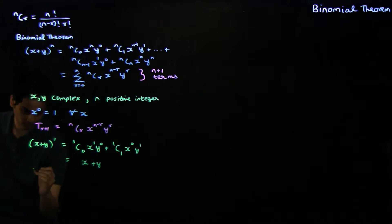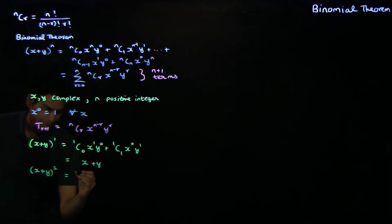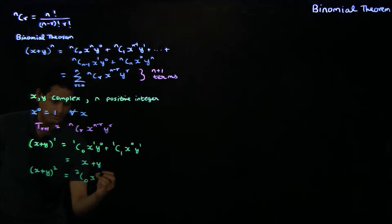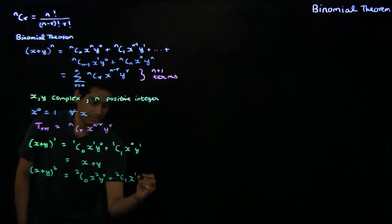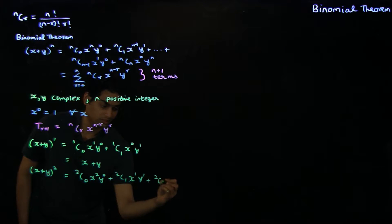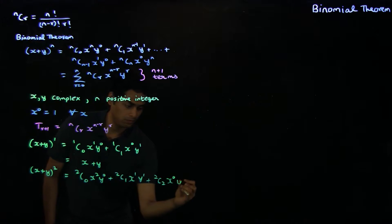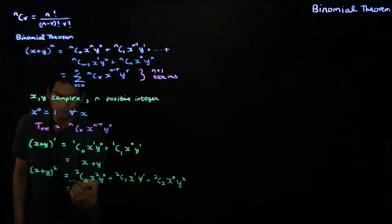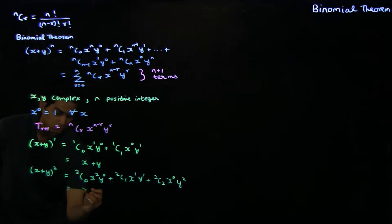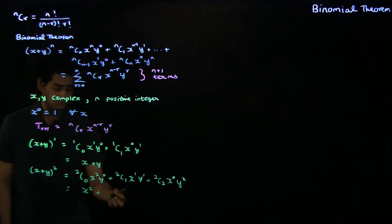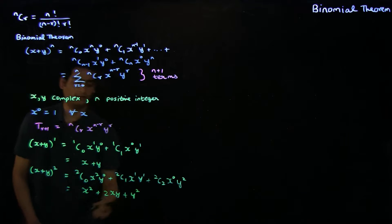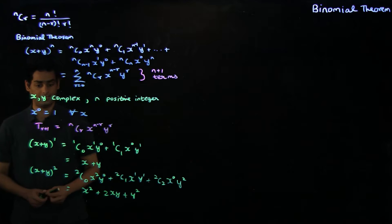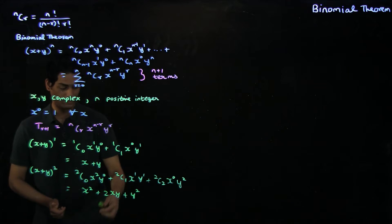We can also derive the case when we have x plus y whole squared. This is nothing but 2C0 times x squared times y to the 0, plus 2C1 times x to the power 1 times y to the power 1, plus 2C2 times x to the power 0 times y squared. Since 2C0 is 1 we have x squared, 2C1 is 2 so we have 2xy, and 2C2 is 1 so we have plus y squared. This gives the well-known result that x plus y whole squared equals x squared plus 2xy plus y squared.